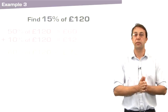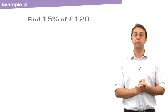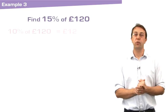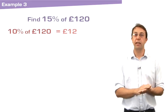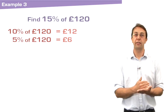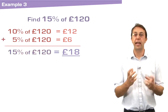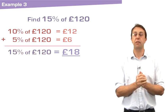Let's look at a couple more quickly. We've got 15% of 120. First, I'm going to find 10%. I'm then going to halve that to get 5%. And I can add the two together to tell me 15% is 18.